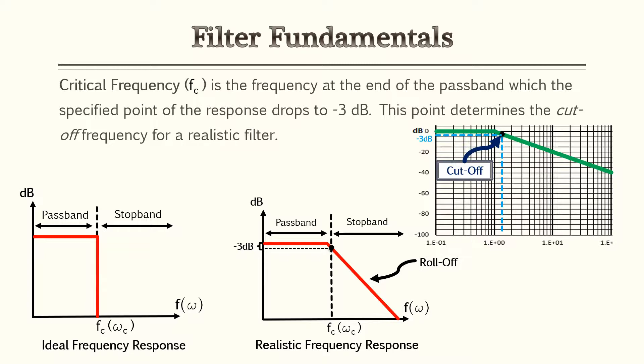In an ideal world, as shown in the bottom left illustration, you'll see a passband drop directly off — it goes straight down once you hit the critical frequency. Unfortunately, that's not realistic in filter design. It has a roll off or a slope at that critical point. If you look at the illustration to the right, you'll see a nice passband area and then it slopes downward or rolls off. When you count negative three decibels, that's your critical frequency or cutoff frequency.